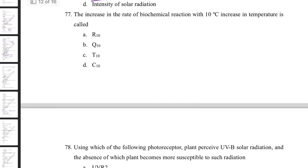The increase in rate of biochemical reaction with every 10°C increase in temperature is called Q10 — the respiratory quotient 10. When temperature increases by 10°C, the rate of biochemical reaction increases 2–3 times. This is represented as the Q10 value.